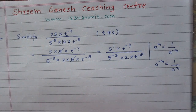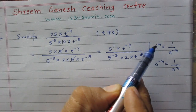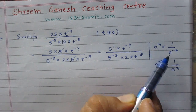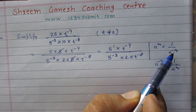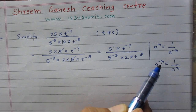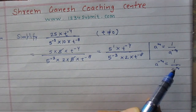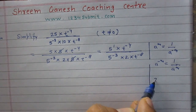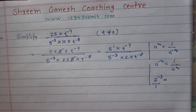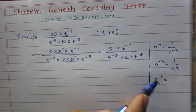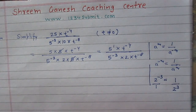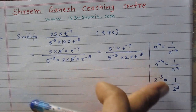You observe that here the power is positive — if you bring this number from numerator to denominator, the index will be negative of itself. Here power is negative; it will become positive. For example, if you have 2 raised to power minus 3 in the numerator, if you bring this number to the denominator you will get 2 raised to power 3.